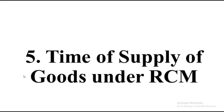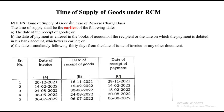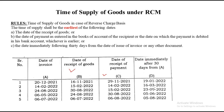Fifth type: time of supply of goods under RCM, also known as reverse charge mechanism. Under RCM, the rule is the earliest of: date of receipt of goods, date of payment, and the date immediately following 30 days from the date of invoice. You need to create an extra column calculating 30 days ahead of the invoice date. For example, if the invoice date is 20th December, 30 days ahead gives 19th January 2022. Then compare date of receipt of goods, date of payment, and the 30-day column — whichever is earliest is your time of supply.